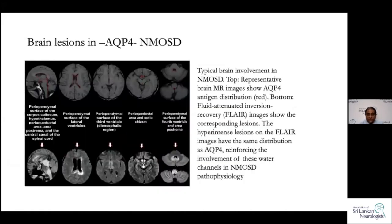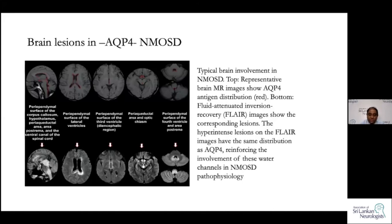Regarding brain lesions in NMOSD: there is real confusion because some patients have many brain lesions. With clinical presentations somewhat similar to MS — optic neuritis, myelitis, and brain lesions — it can be confusing to diagnose NMOSD. It is not uncommon for patients to be diagnosed with MS when they actually have MOG or aquaporin-4 disease. Typical brain lesion locations include the periependymal surface of the corpus callosum, hypothalamus, periaqueductal area, and area postrema — areas where astrocyte foot processes carry aquaporin-4 water channels.